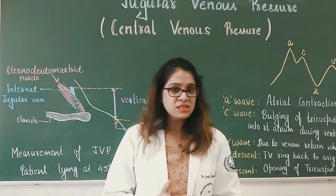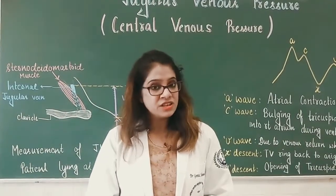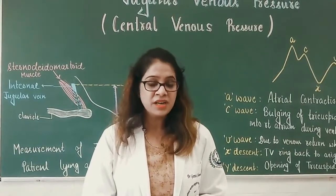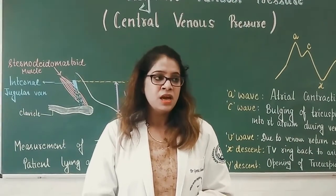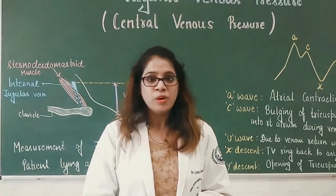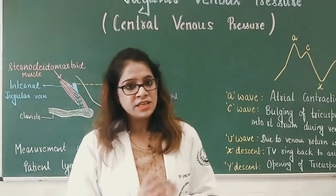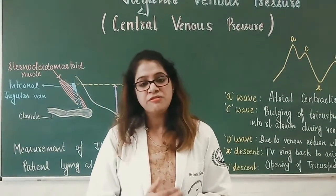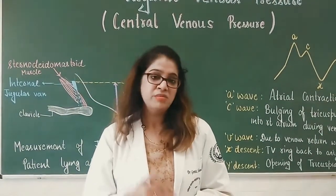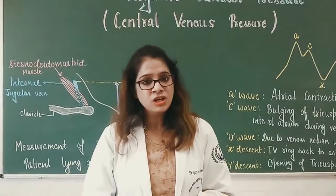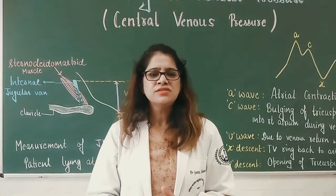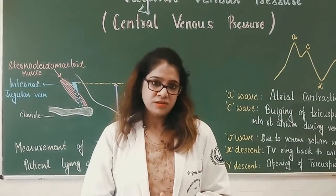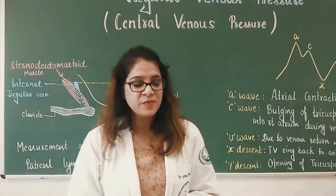Can we measure the pressure of the external jugular vein, since it also drains into the right atrium? No, because the external jugular vein may be compressed by fascia or by the clavicle, so it gives the wrong value of the central venous pressure.